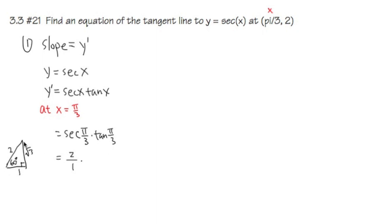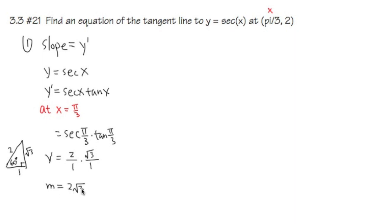Tangent means opposite over adjacent, and that's square root of 3 over 1. So we have 2 over 1 times square root of 3 over 1. The denominator is just 1. So y prime equals 2 times square root of 3, which means the slope m is 2√3. That's the calculus part.